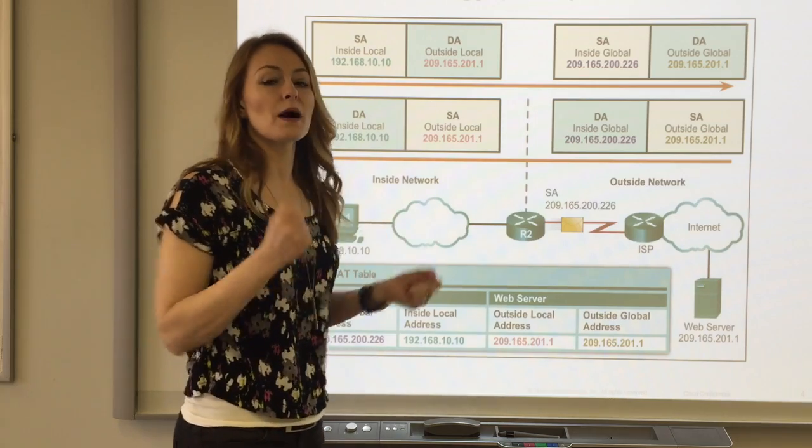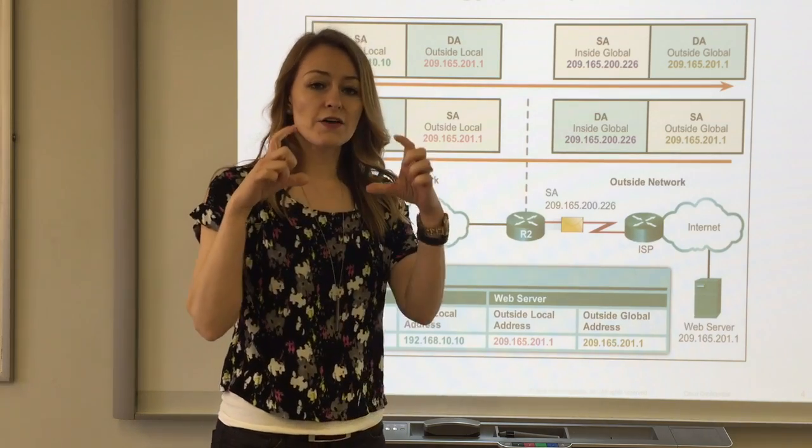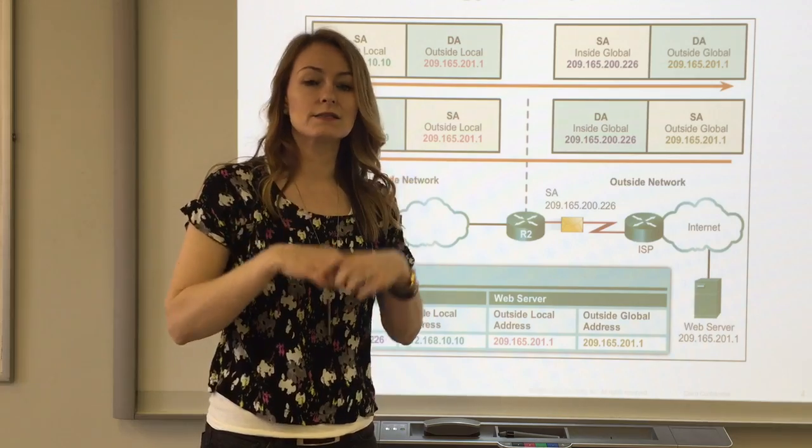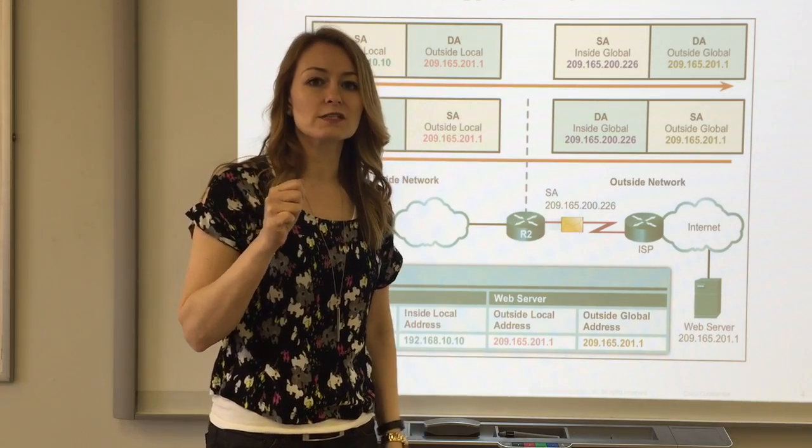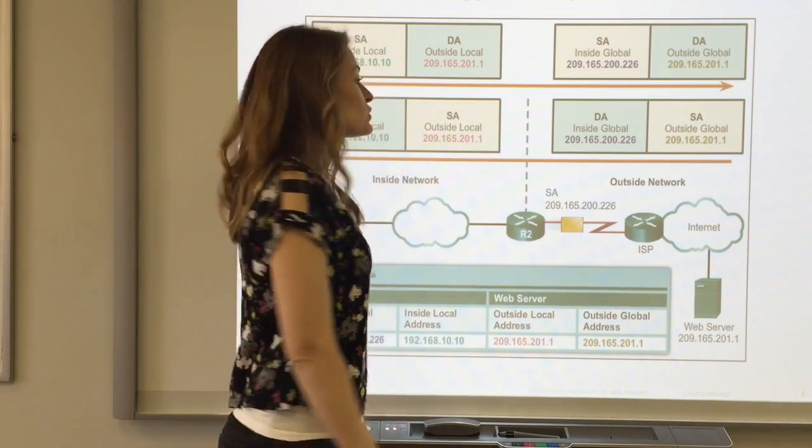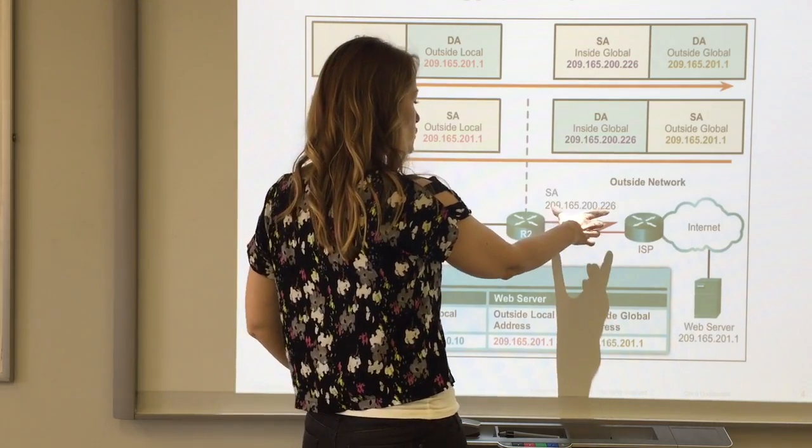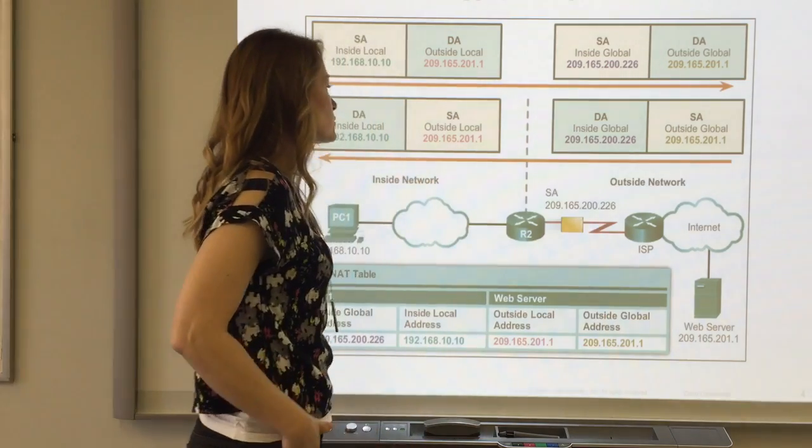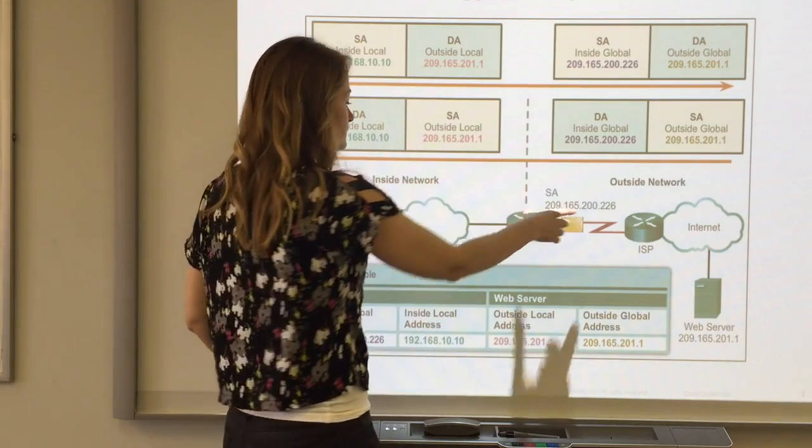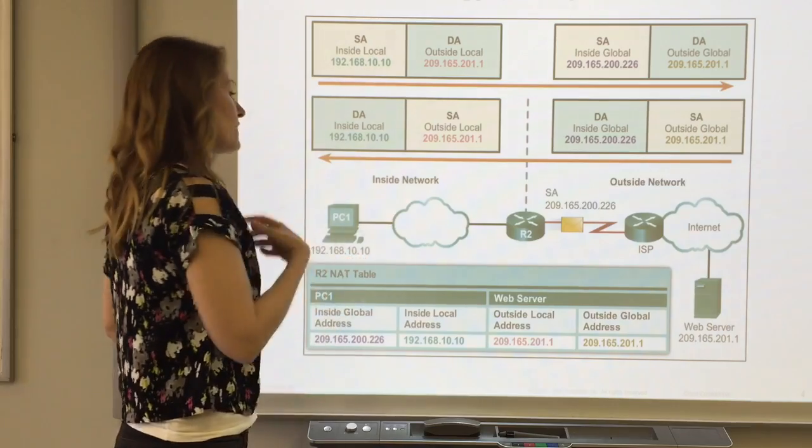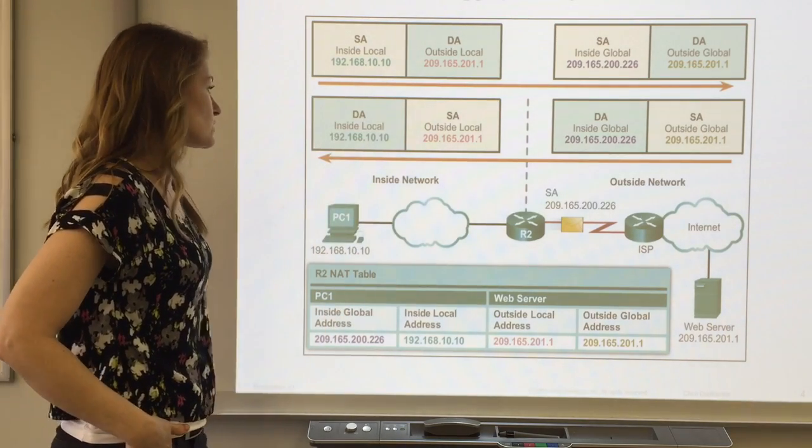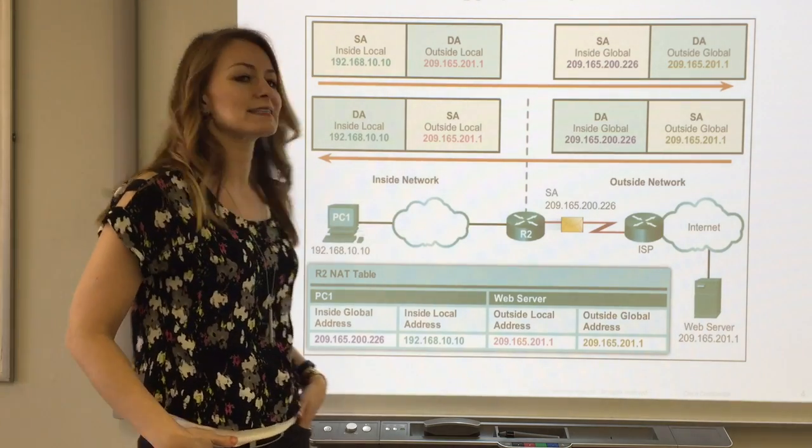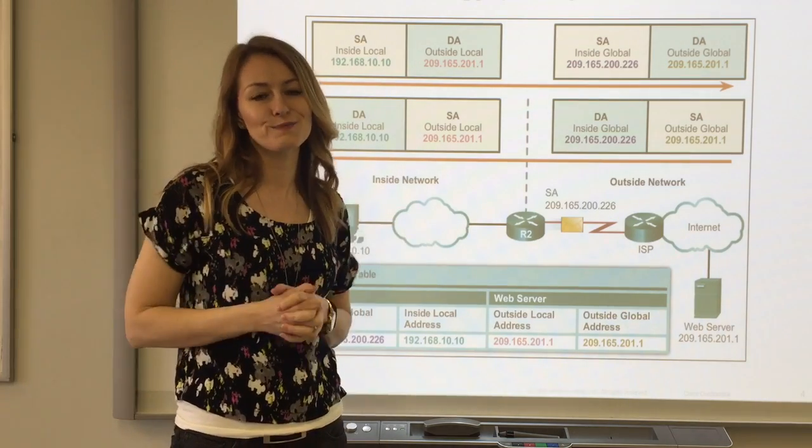In other words, when mom picks up the mail, the envelope says Jonathan. But when she gives it to Jonathan, she says, hey little slugger, you got a letter. The address 209.165.200.226 got translated and sent directly to the inside local address 192.168.10.10, so little slugger can open his mail.